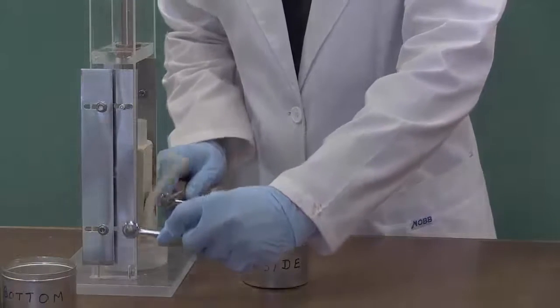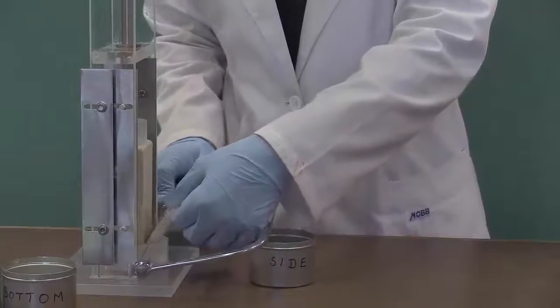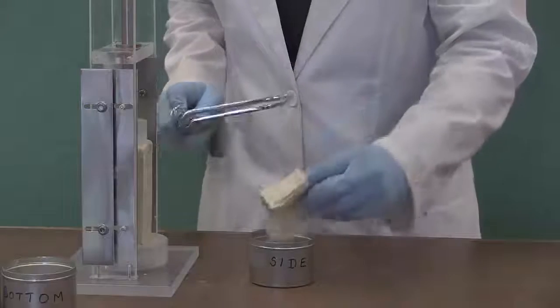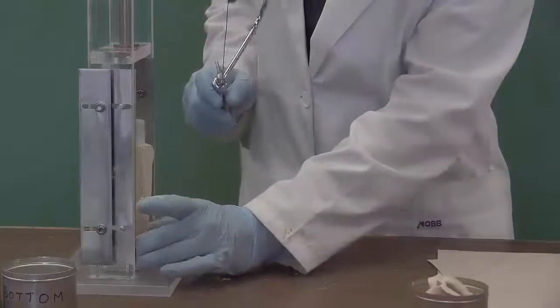Start trimming the sides of the sample by sliding the wire saw along the guiding edges of the soil lathe. Collect a portion of these side trimmings into one of the metal containers. These trimmings will be used to calculate the moisture content.